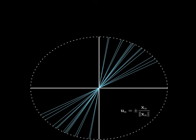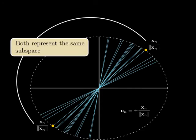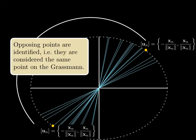The space consisting of one-dimensional subspaces can thus be constructed by identifying opposing points on the unit sphere. The resulting space is an instance of the Grassmann manifold.